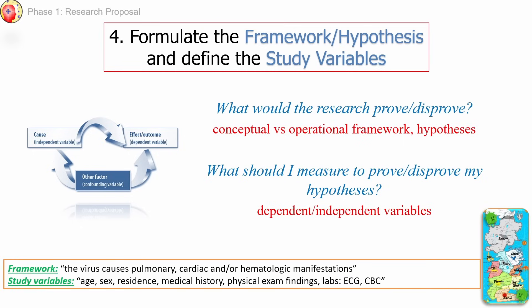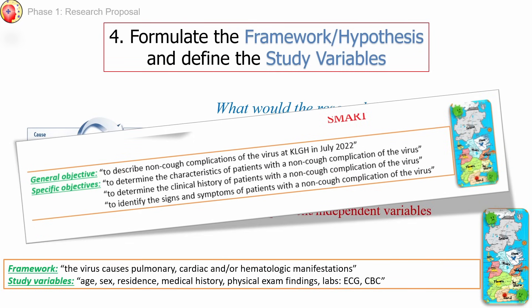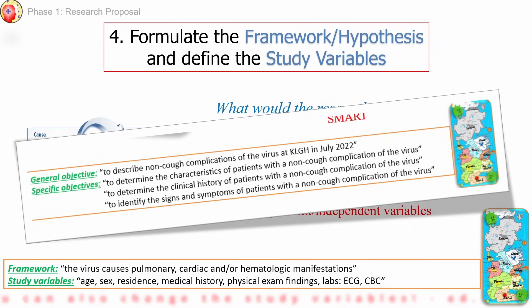Knowing your research variables by heart is a crucial step. You should be able to identify all your research variables, define each clearly, and describe what type each variable is — whether continuous versus discrete, nominal versus ordinal versus interval versus ratio, or dependent versus independent. From our RRL, we noted cough, chest pain, and anemia as possible non-cough manifestations. Our framework posits that the virus causes pulmonary, cardiac, and/or hematologic manifestations. Study variables include demographic data such as age, sex, and residence, as well as medical history, physical exam findings, and laboratory findings.